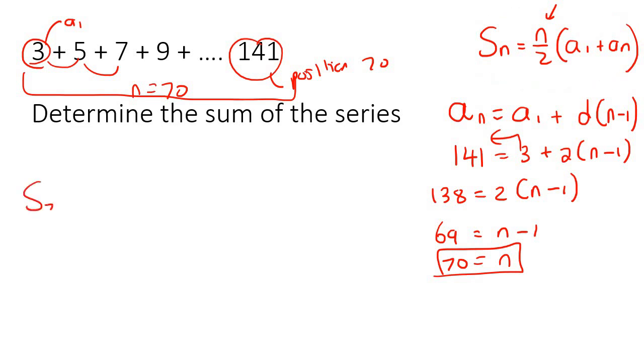So n would be 70 in this formula. So we could find out the sum of all 70 terms now by saying 70 over 2, A1 is 3, and then the last term is 141, and then we can go work everything out. And that's going to be 5040. So if you had to go plus all of these numbers together, you would get 5040.